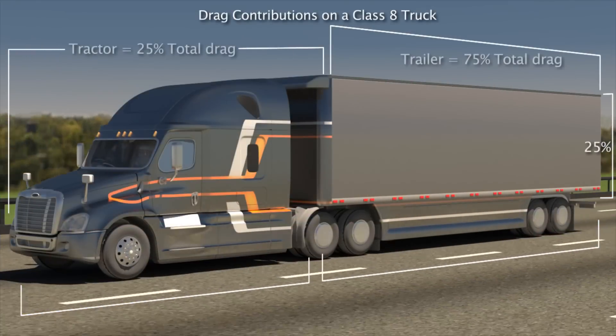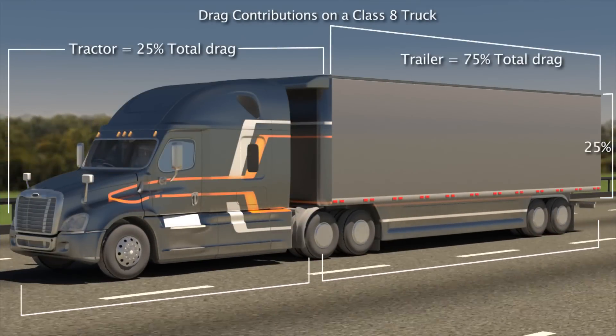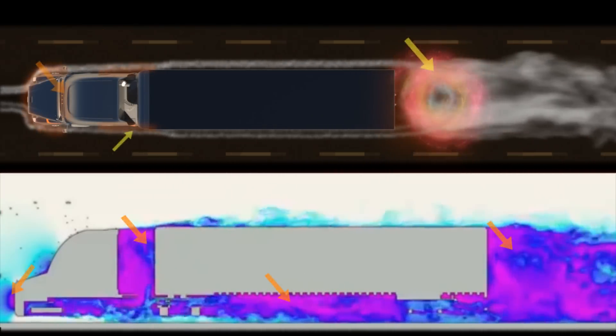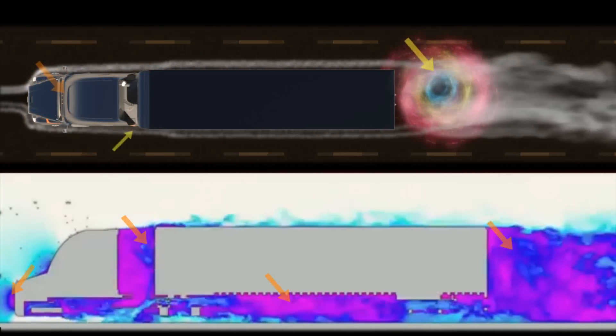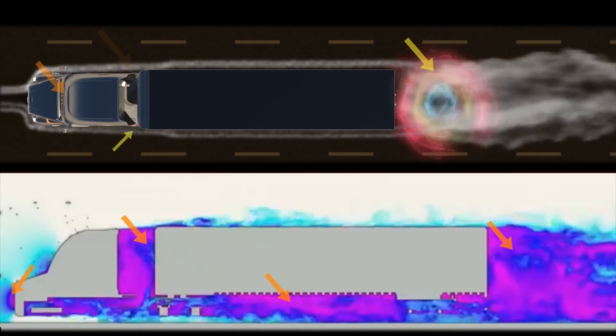There are numerous locations on the trucks that are responsible for proportionately large percentages of the drag. By pinpointing and addressing these low-pressure hotspots, PlasmaStream's technology will lead to significant improvements in fuel economy.